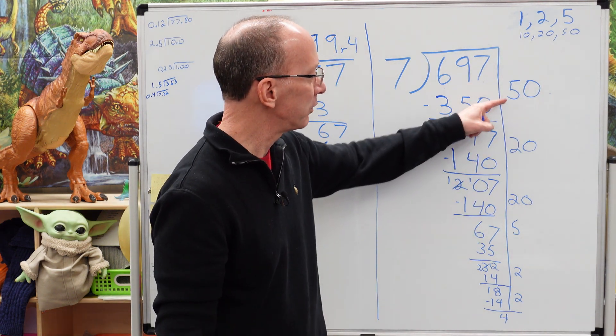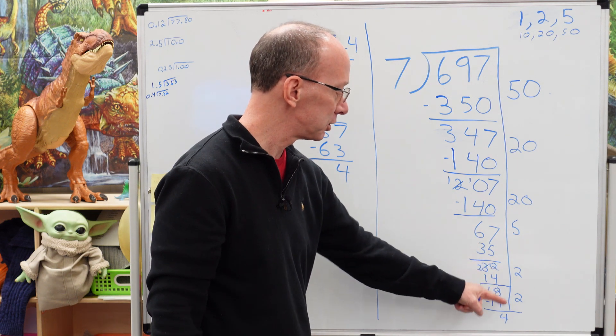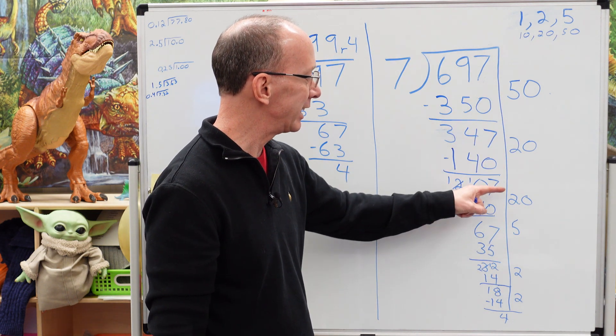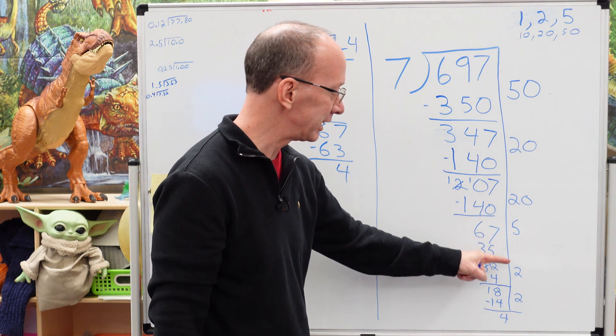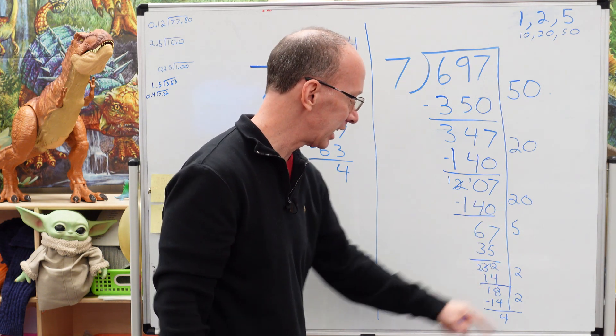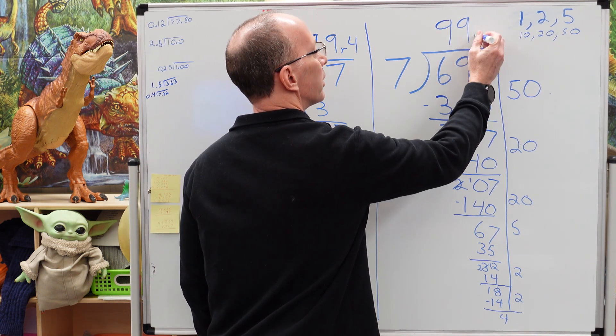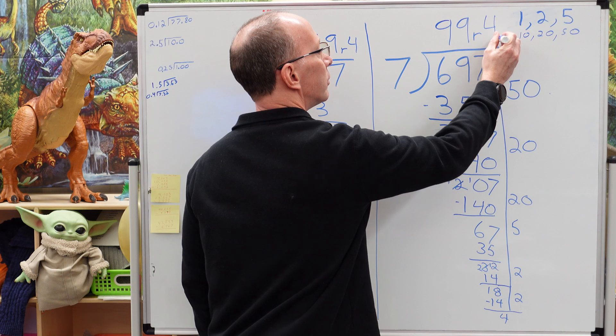So I have 50 plus 20 plus 20, plus five, plus two, plus two. So 50 plus 20 is 60, 70, 80, 90, 95, 96, 97, 98, 99, with a remainder of four.